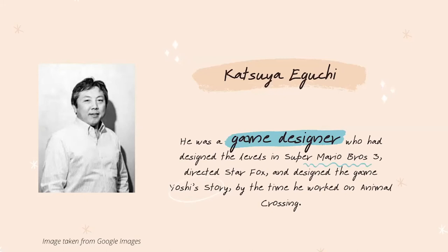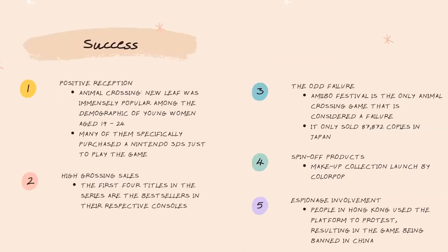That's why Nintendo pushed for Wi-Fi and connectivity - so more players can join a shared experience. They don't have to play at the same time, but if they can participate in each other's islands, they feel more connected, which builds on the loneliness Iguchi felt when he left home to pursue his dreams. New Leaf is the most successful Animal Crossing game - it was immensely popular among young women aged 19 to 24, many of whom specifically purchased a Nintendo 3DS just to play it, hitting two birds with one stone.